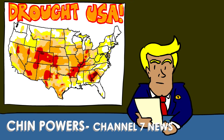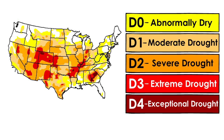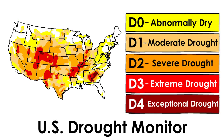Perhaps you've seen maps like these on the news when drought is being reported and wondered what the different colors actually mean. They are categories of drought that are set by the U.S. Drought Monitor.